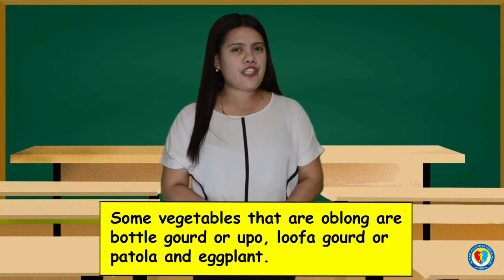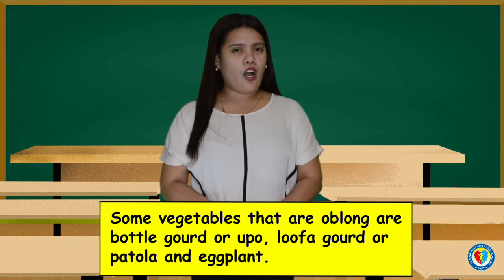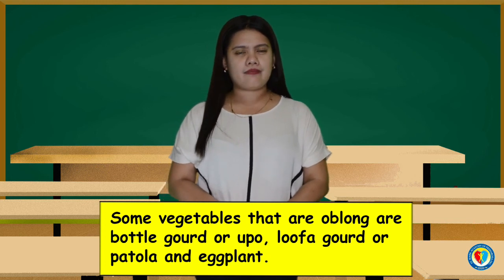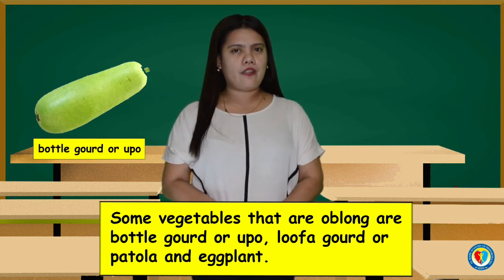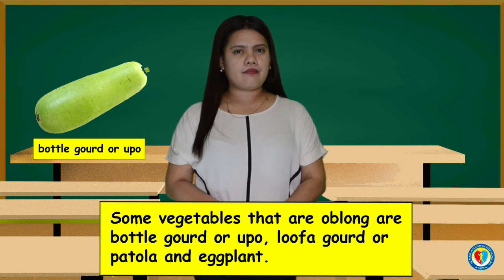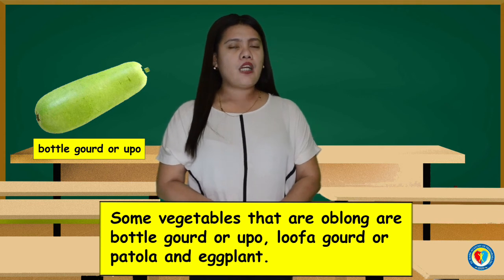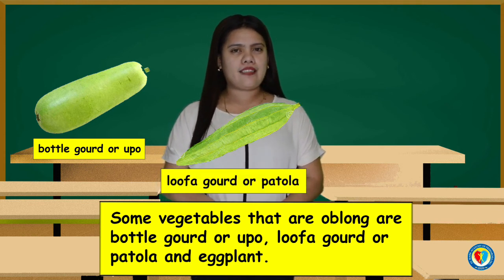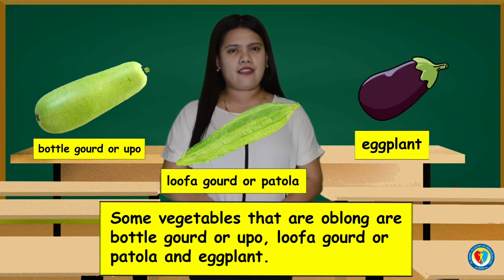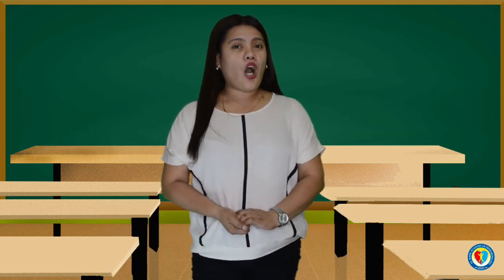Some vegetables are the same shape. Some vegetables that are oblong are bottle gourd or upo, luffa gourd or patola, and eggplant. Always remember that objects have different shapes and sizes.